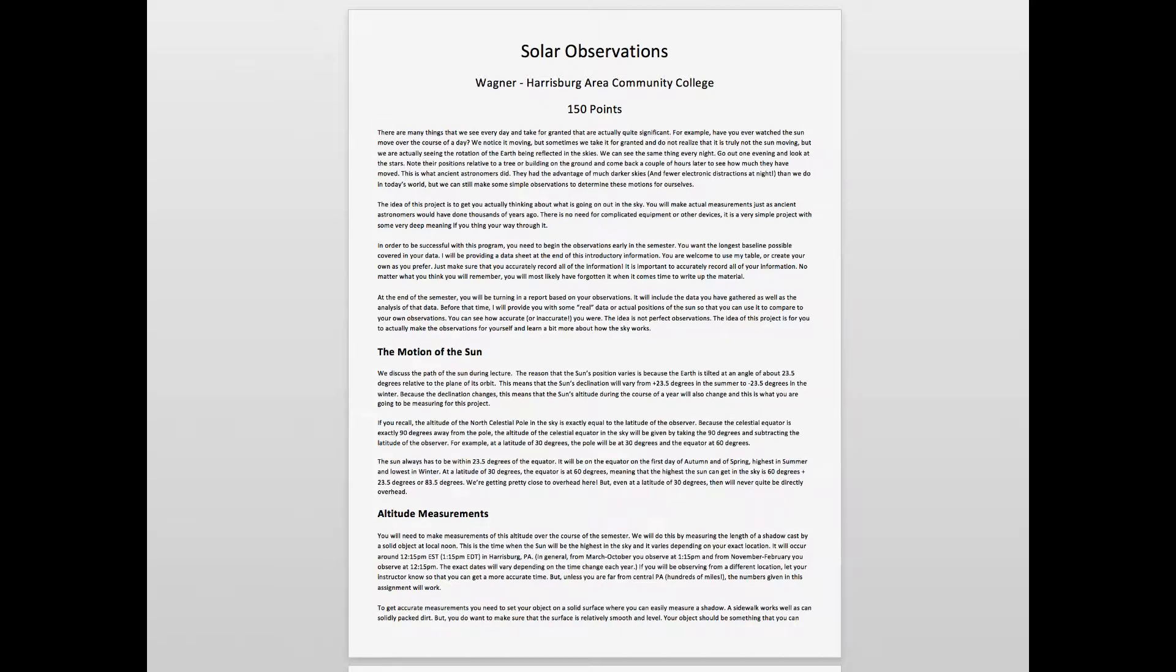This project is a chance to actually have you get out and make some observations of the sun, a very easy astronomical object to see. We're going to be observing the length of the shadow cast by an object and how that changes over the course of the semester. Part of the grade is getting the observations and part of it is an analysis that we will do later.